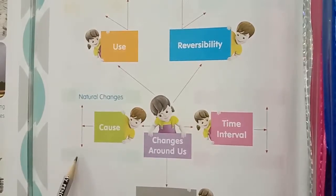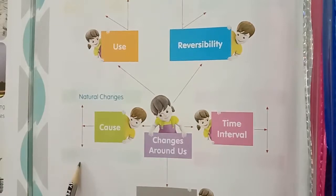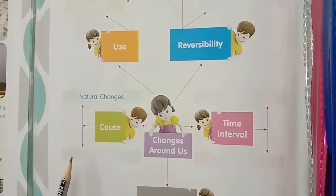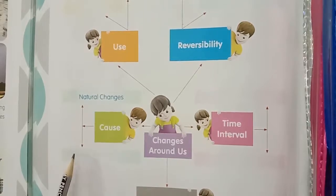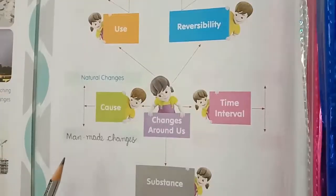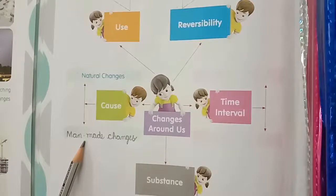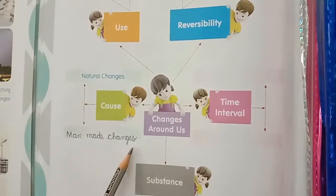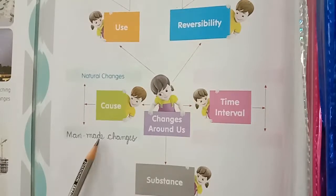Some changes like making ice cream, manufacturing goods, cooking food, constructing buildings, growing crops, canning food, baking bread, and cutting trees are deliberately done by human beings. These are man-made changes. Write here: man-made changes.